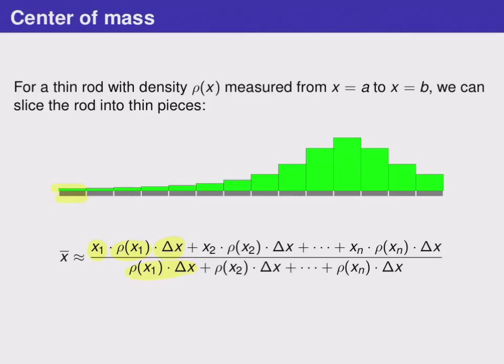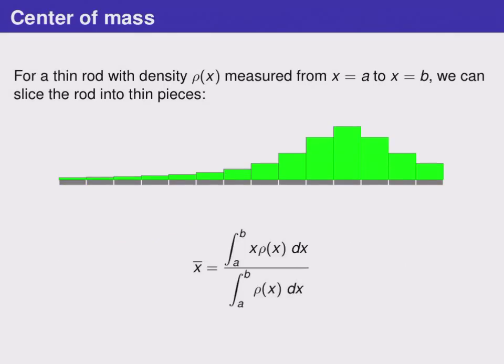Again, if we let delta x go to zero so that we get a better and better approximation for the center of mass, this turns into a definite integral. And in this case, the definite integral is for x times the density, because we're multiplying location by density, and the dx represents the volume units here.